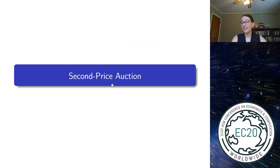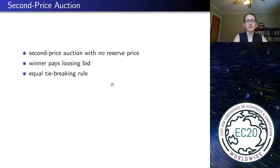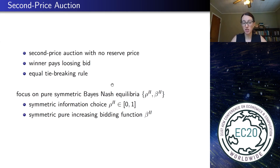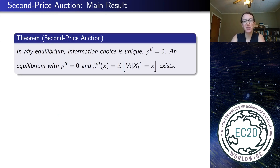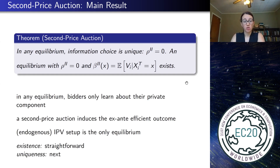Now let's discuss the second price auction. This is a standard second price auction with no reserve price and equal tie-breaking rules. The class of equilibria I admit are pure strategy Bayes-Nash equilibria. I want bidders to choose a symmetric information choice strategy and use symmetric pure increasing bidding functions, denoted beta_2 for the second price auction. The main theorem is that in any such equilibrium, information choice is unique: bidders will learn only about their private components, and such an equilibrium does in fact exist. This is good news for the second price auction — we get an ex-ante efficient outcome where bidders are not wasting resources on a component irrelevant for the efficient allocation decision.